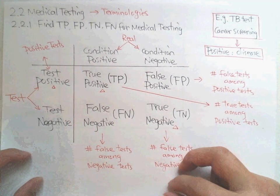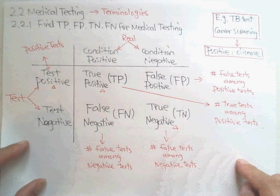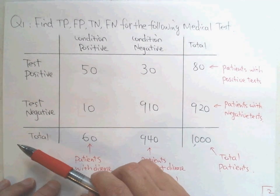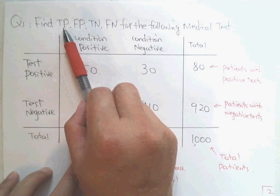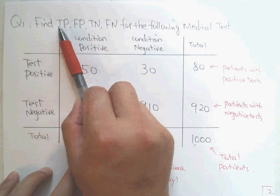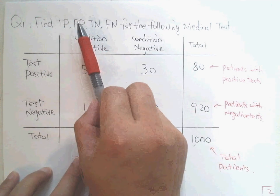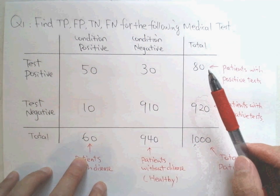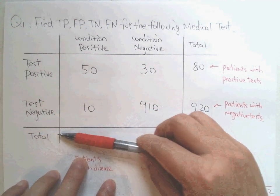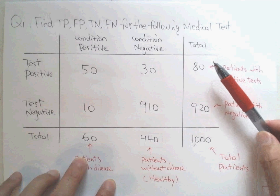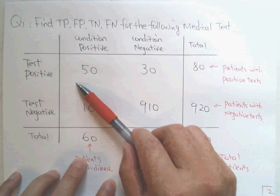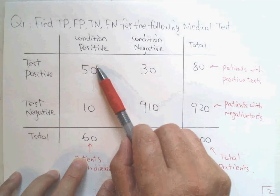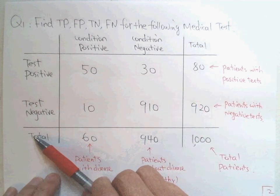I will use two examples to show you how to identify these values in a question. For the first example, we have a contingency table for medical testing — you can imagine this is a TB test. The question asks you to determine the true positive, false positive, true negative, and false negative. There is one extra row and column for totals that I need to explain.